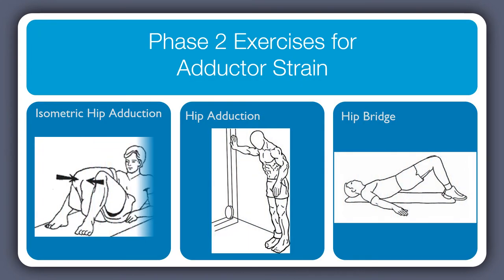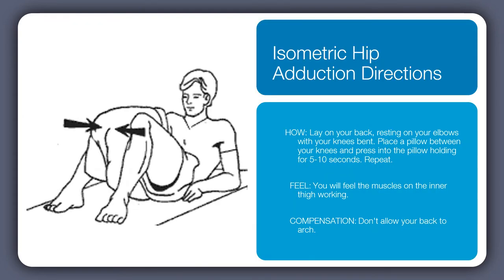Phase two exercises for adductor strain are isometric hip adduction, hip adduction standing, and the hip bridge. For isometric hip adduction, you may need a pillow or bolster to put between your knees. Laying on your back, prop yourself up onto your elbows, bend your knees, and place the pillow between the knees. Press the knees into the pillow with long sustained holds of about 10 seconds or more, pushing hard but not to the point of stressing yourself out.